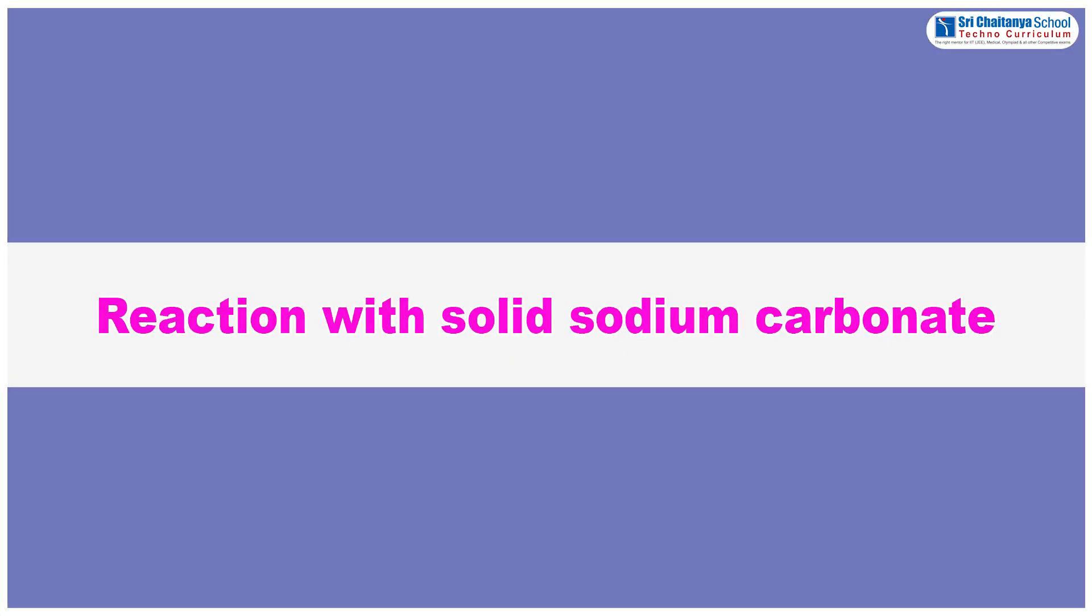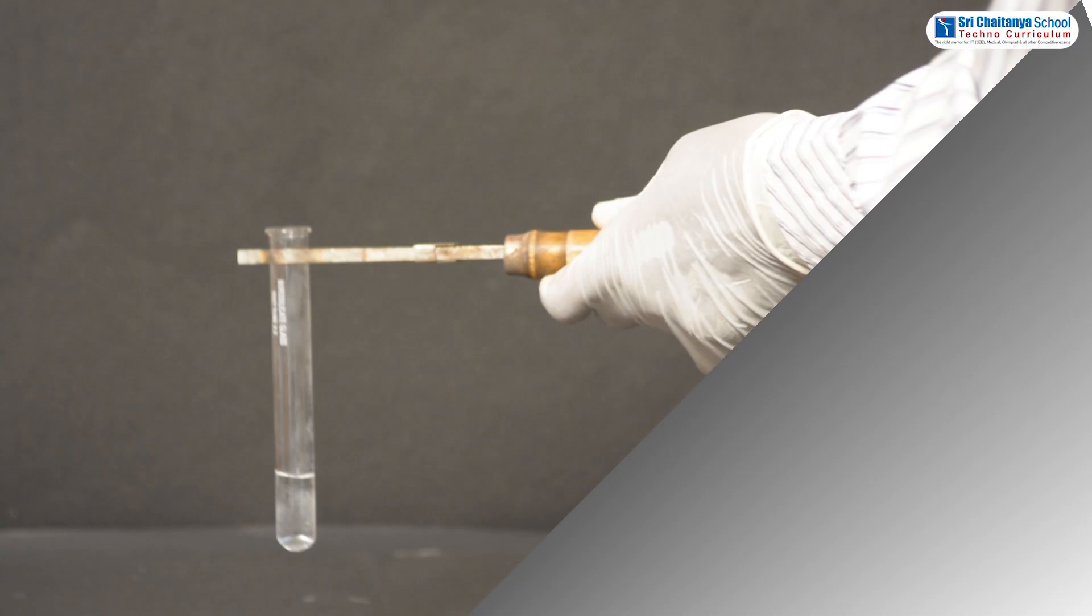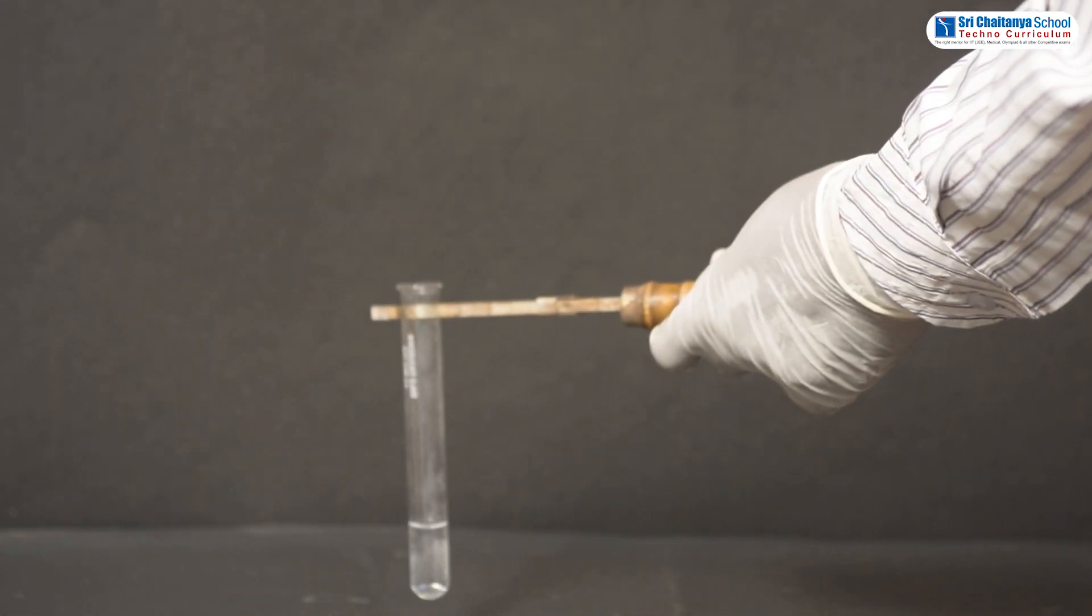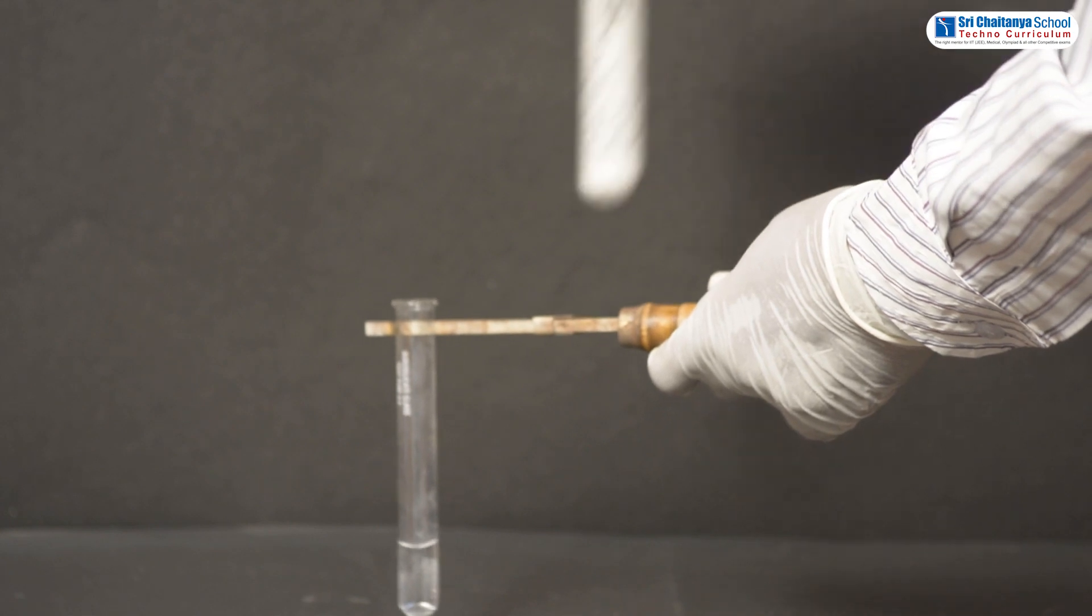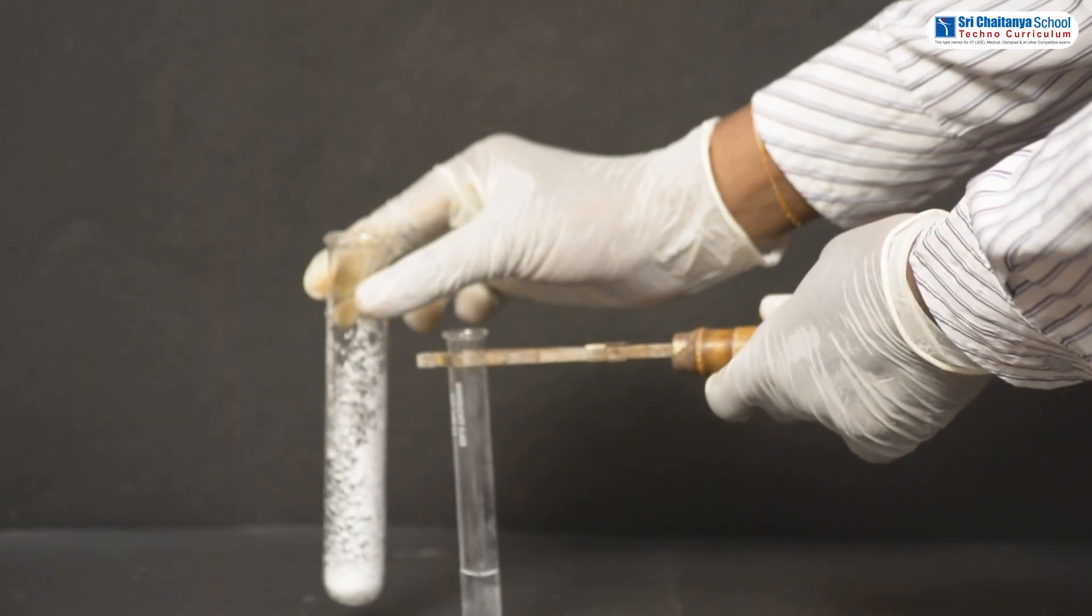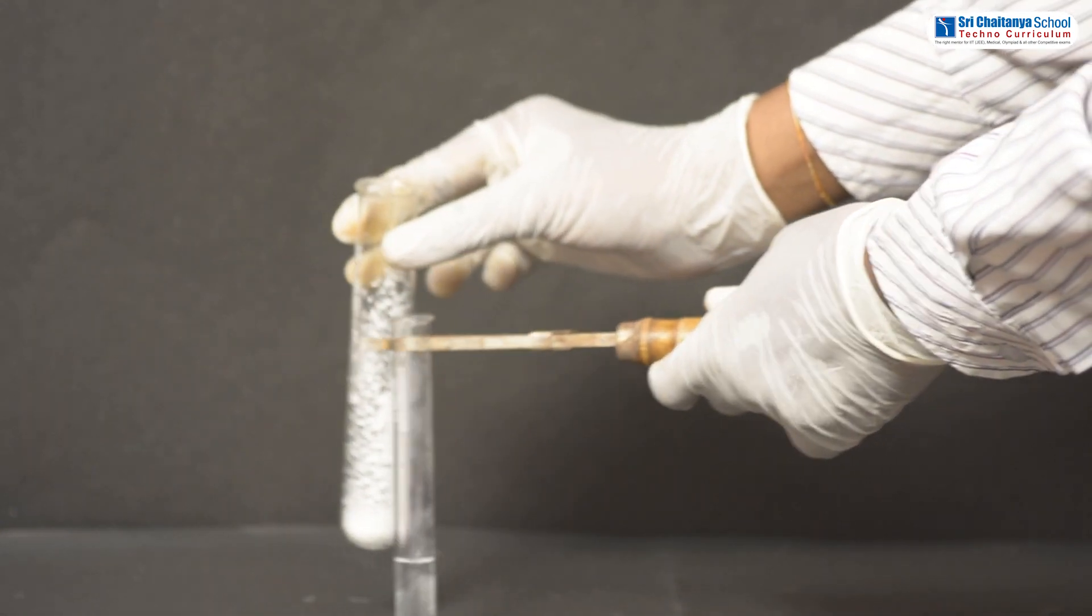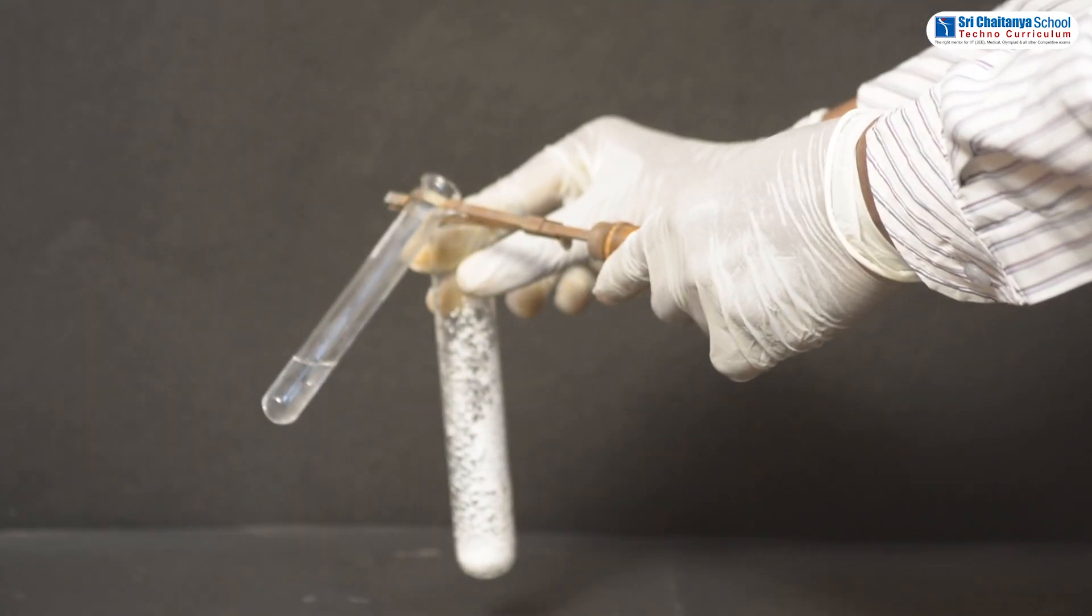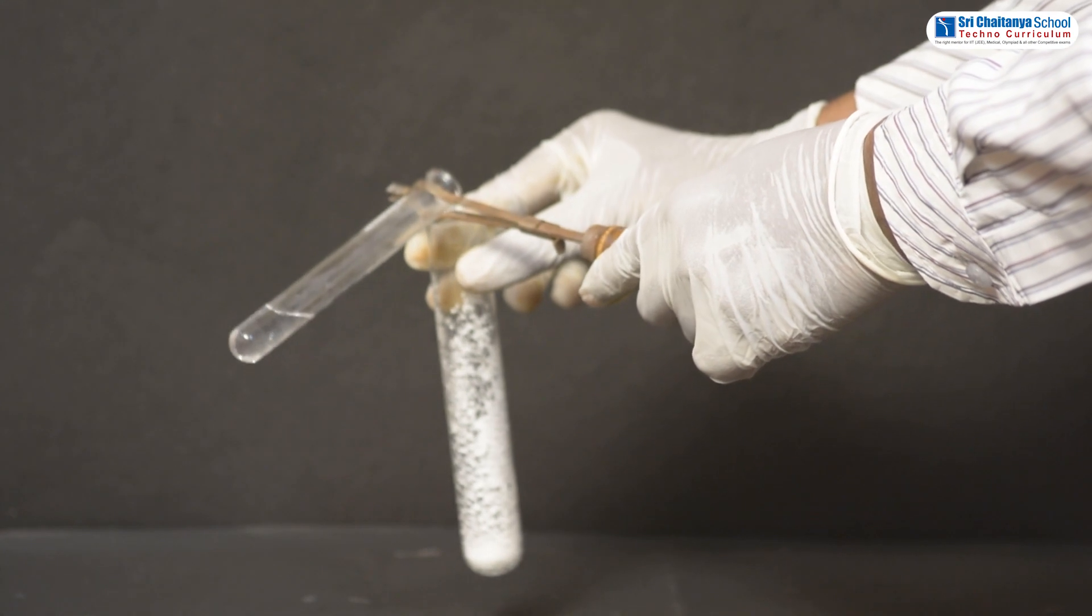Reaction with solid sodium carbonate: Take 2 ml of solution of NaOH in a test tube and solid sodium carbonate. Add NaOH solution into carbonate.